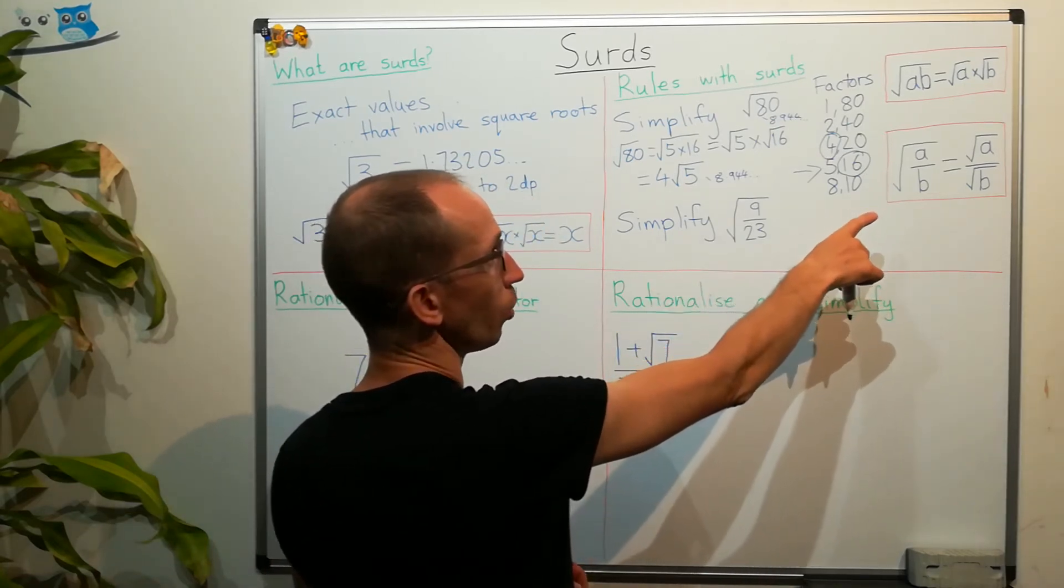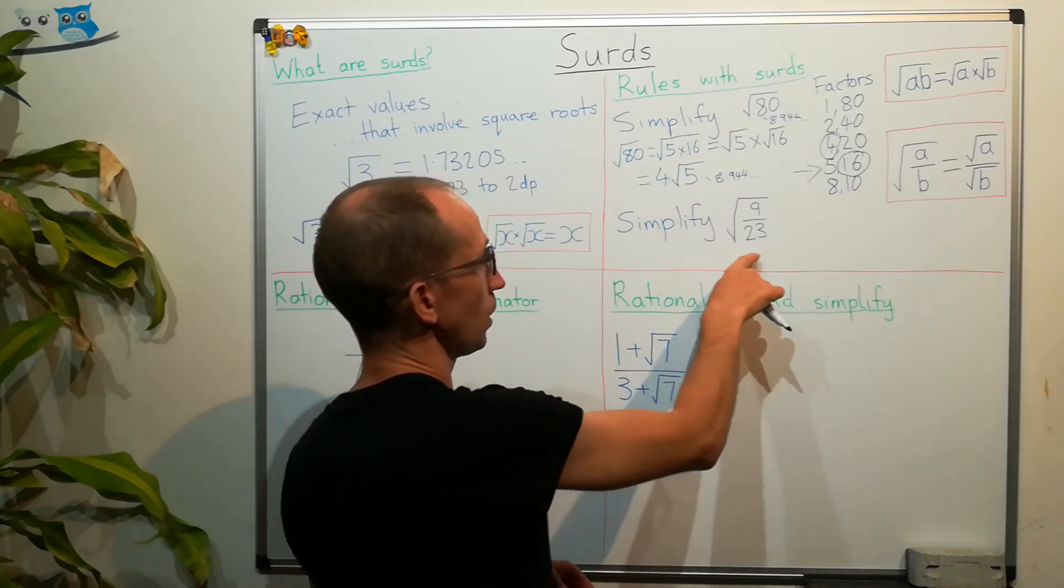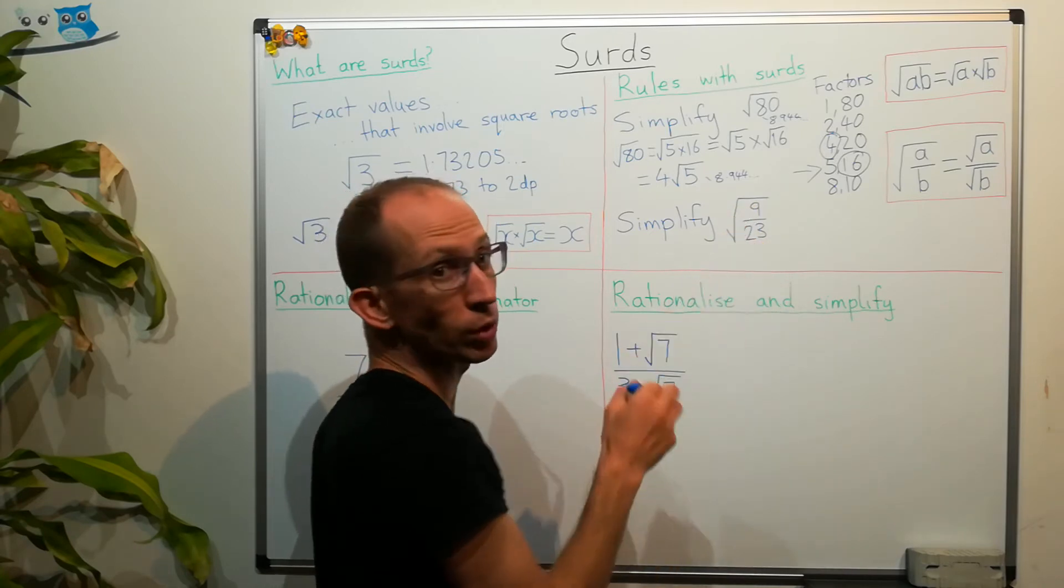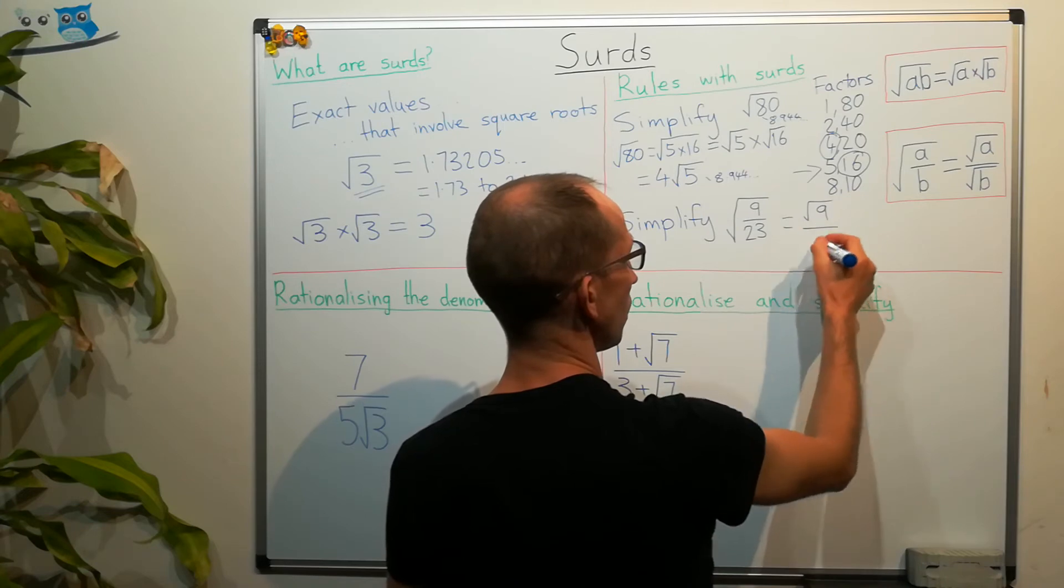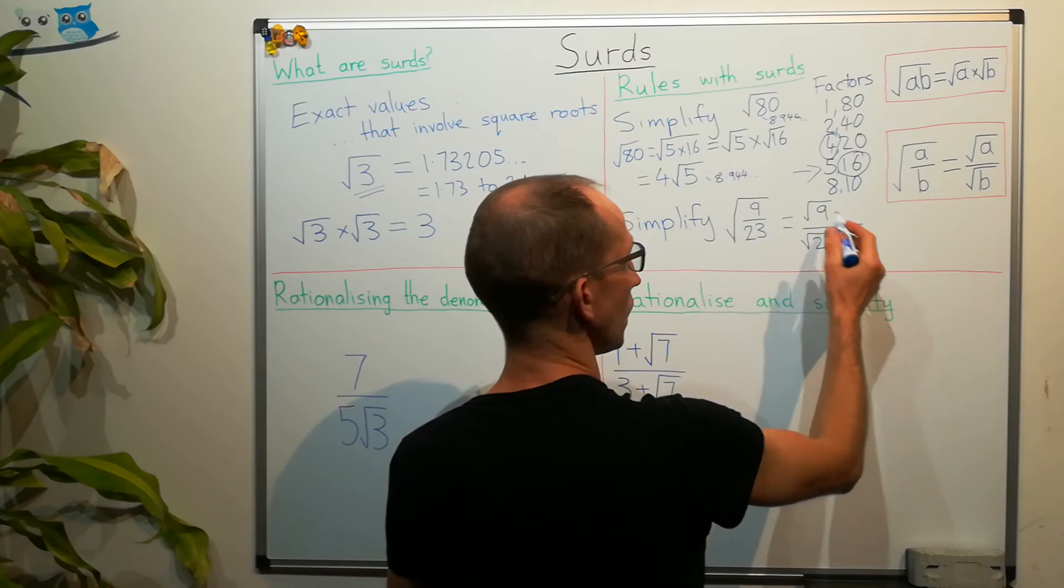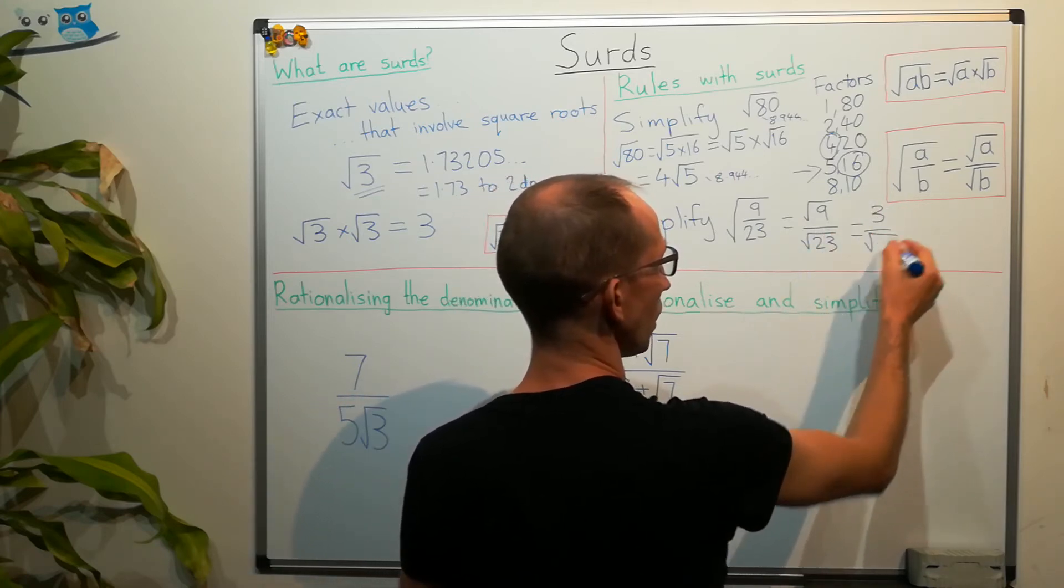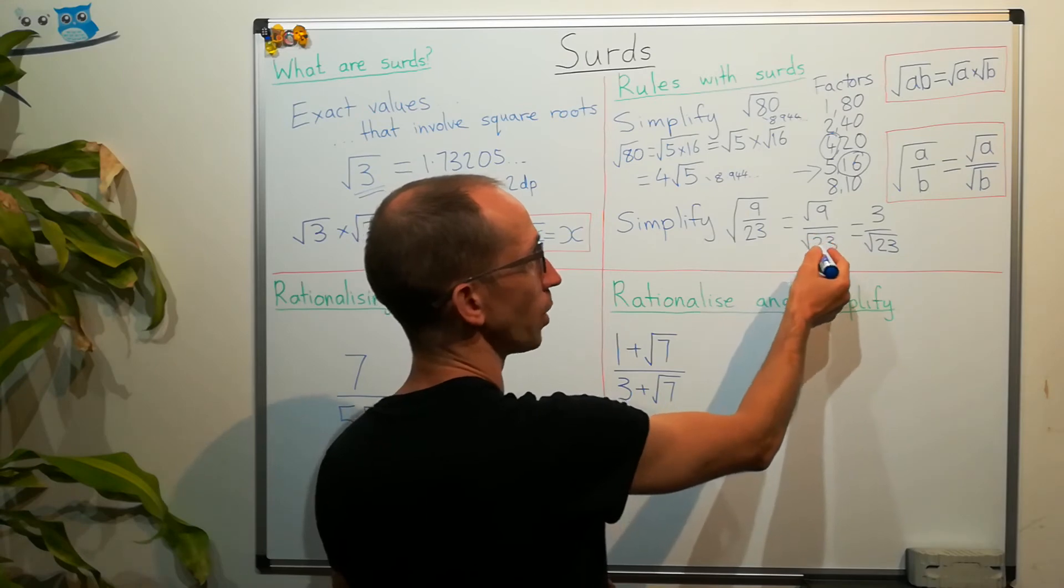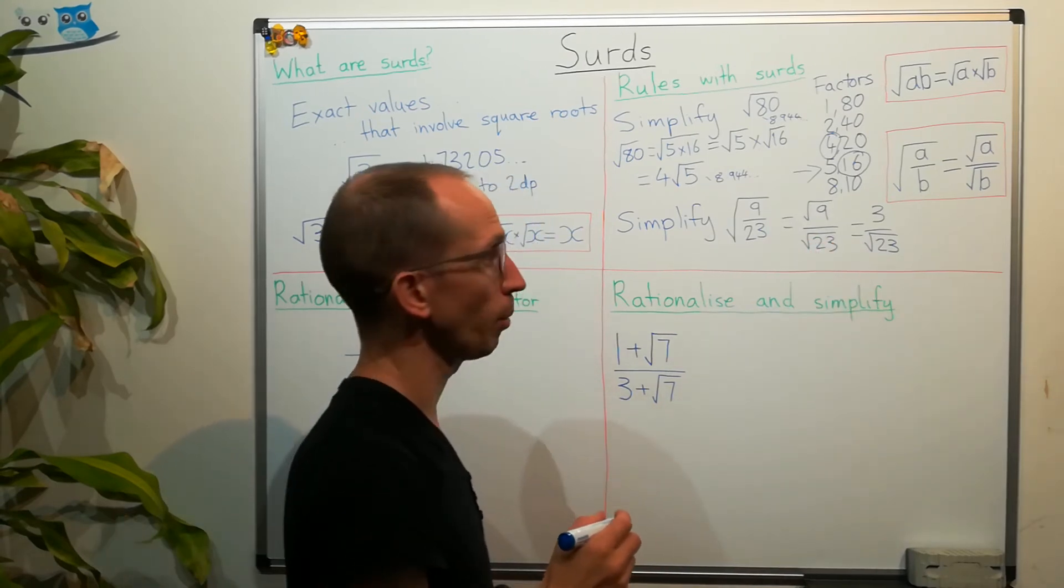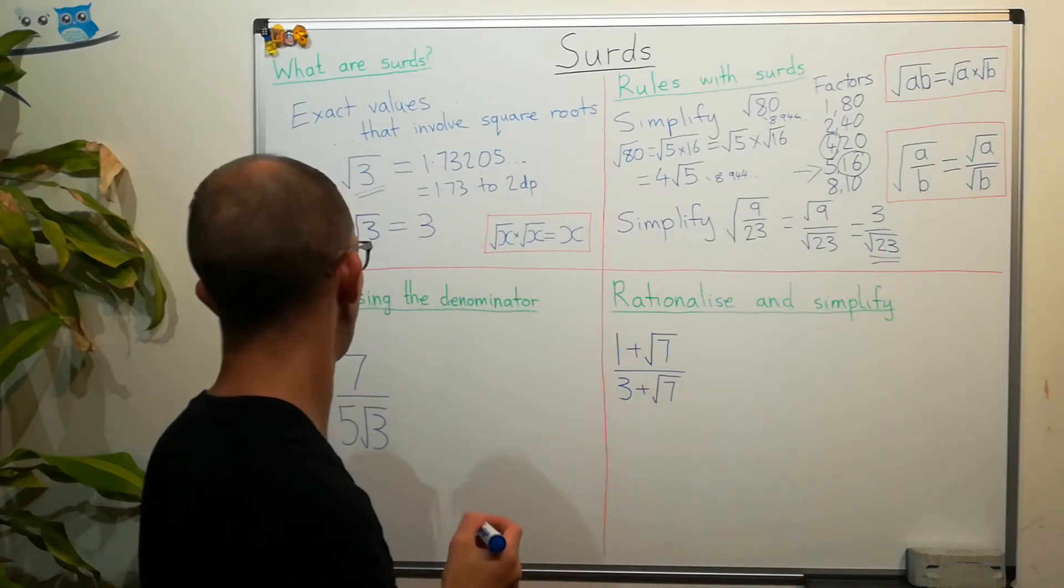Now, we've got another law which is similar but is looking at division rather than multiplication. So, to simplify the square root of 9 over 23, we can write this as the square root of 9 divided by the square root of 23. And we should all know that the square root of 9 is 3. And the square root of 23, that's just going to stay the same. This is a prime number so we're not going to be able to make that any more simple. That's our result here.